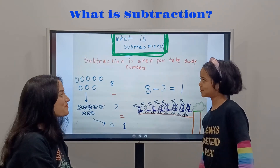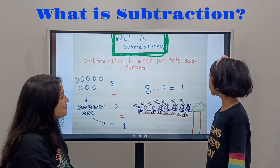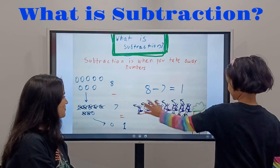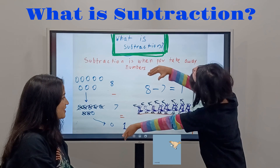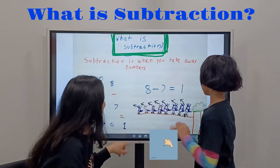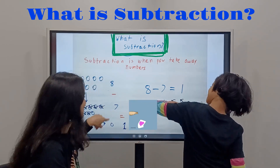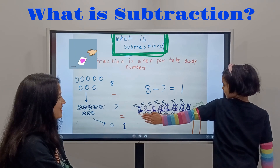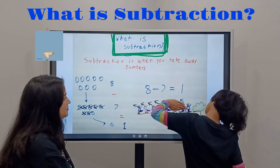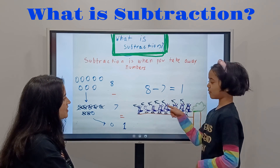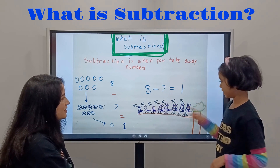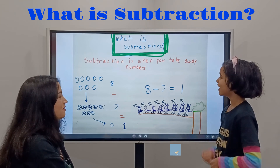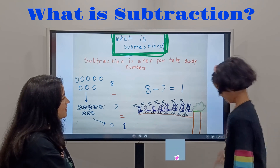So what is subtraction? Subtraction is when you take away. It's like this — you have eight birds here, then seven fly away. You see the arrows? That's how many birds are going away. And then this one's just here, so there's only one left. Right? Yes. It's because it's eight minus seven equals one.